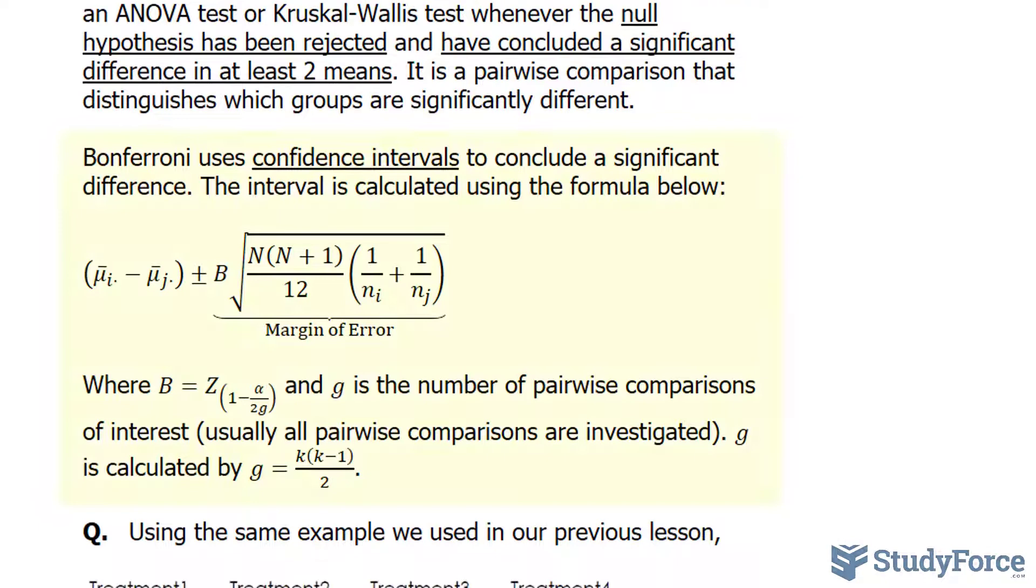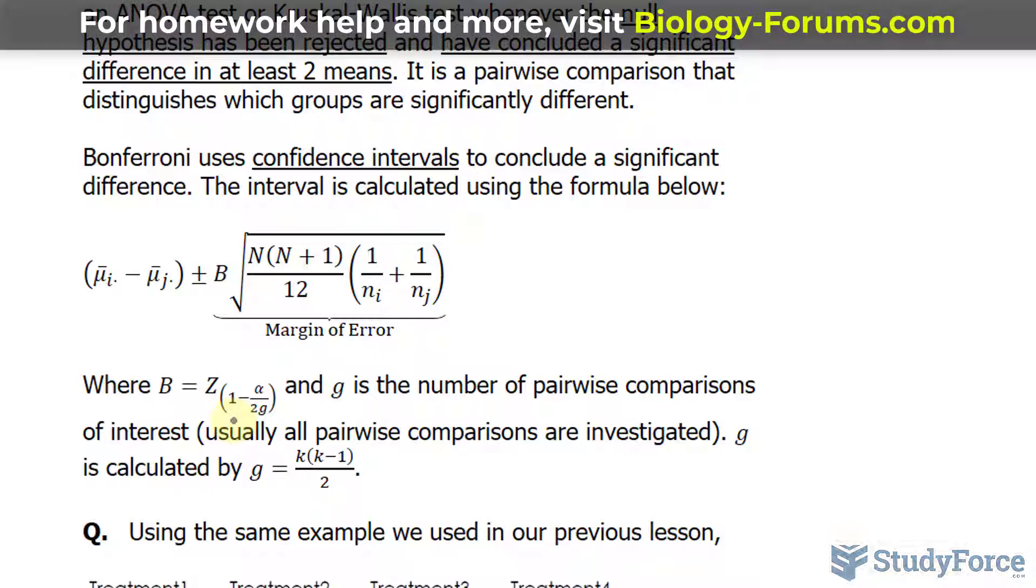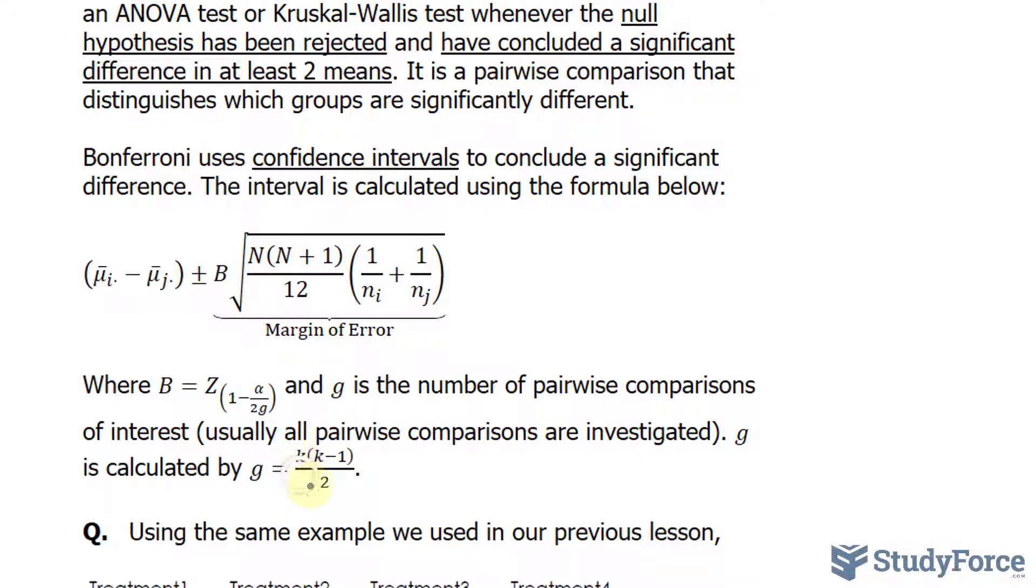Bonferroni uses confidence intervals to conclude a significant difference. The interval is calculated using the formula below where we subtract the means between the groups that we're comparing plus the margin of error. This factor B is the z-score at this specific probability. Depending on the size of your sample, this may be replaced with a t-value. And this factor G is the number of pairwise comparisons of interest. Usually all pairwise comparisons are investigated. G is calculated using this formula and K represents the number of levels or treatments or whatever you are testing between the groups.